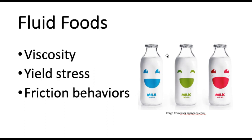We can also use friction to potentially measure astringency. Astringency is that dry, puckery mouthfeel that you get with certain foods — for example, cranberry juice or pomegranate juice are astringent, and sometimes things that are very sour are also astringent. Sometimes we can pick that up as friction increases, though not always. For instance, with higher-protein milk products we can sometimes measure higher friction corresponding to more astringency, but sometimes we can't pick it up. So it really depends on what product we have.